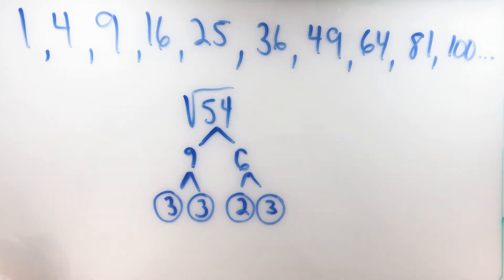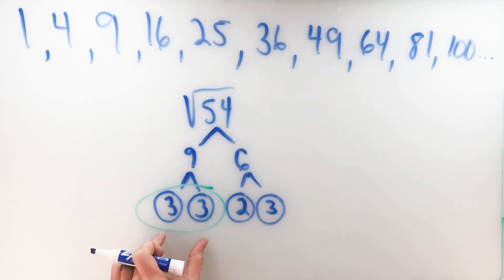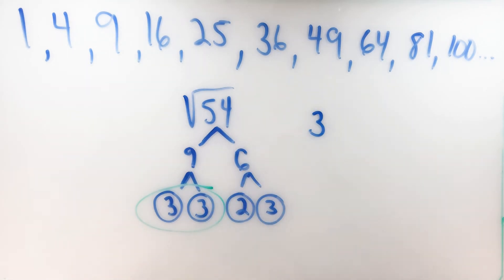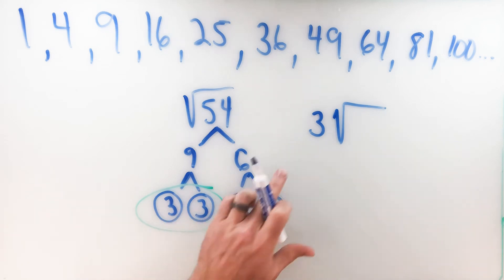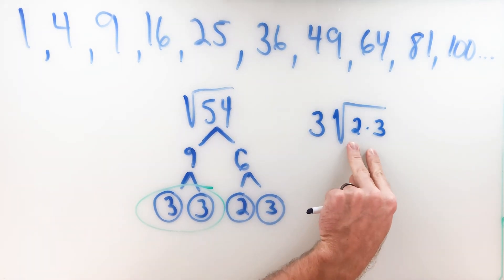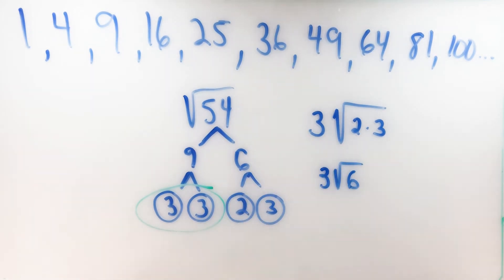We have a pair of 3s, so we bring a 3 out front. Any factor that does not have a pair stays inside the square root. We have a 2 and another 3 left over — those get multiplied back together inside the root. 2 times 3 is 6, so we're left with 3 times the square root of 6. The square root of 54 simplifies to 3 times the square root of 6.